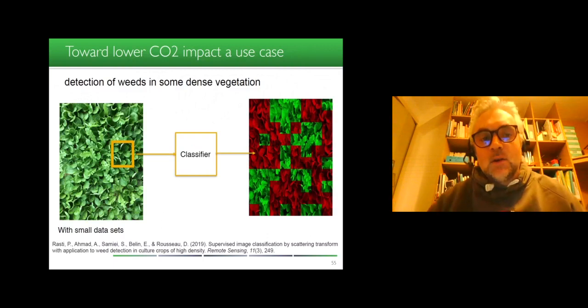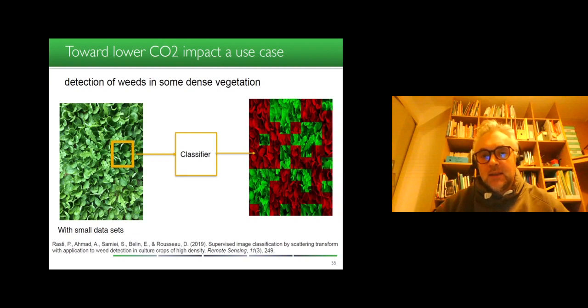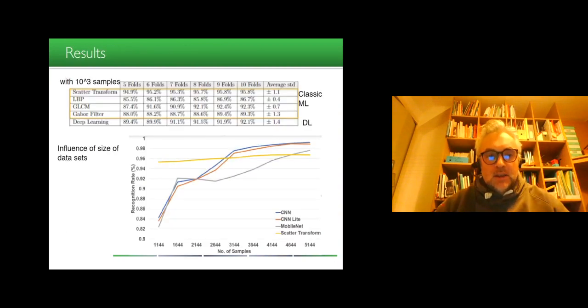So the road is still open to head toward a lower CO2 impact of the use of deep architecture. We tried to test some of these light architectures in this use case, where we were in charge of detecting weeds in some dense vegetations. And for this matter, we compared classical machine learning, including a recent approach proposed by Stefan Mallat called scatter transform, which is in yellow here. And you can see that the performance of the scatter transform are pretty close to a convolutional neural network, optimal value of the deep learning in this case, and also to a variant which are called light CNN or mobile net CNN, which can be embedded in a smartphone, for instance.